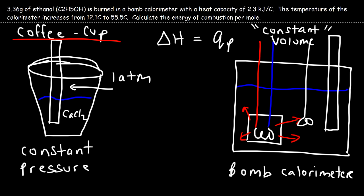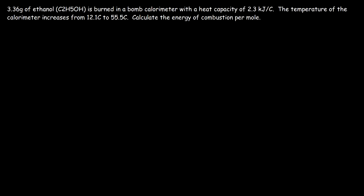Now let's focus on the problem: 3.36 grams of ethanol is burned in a bomb calorimeter with a heat capacity of 2.3 kilojoules per Celsius. The temperature of the calorimeter increases from 12.1 to 55.5 degrees Celsius. Calculate the energy of combustion per mole. The energy released by the reaction equals the energy absorbed by the calorimeter.